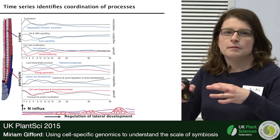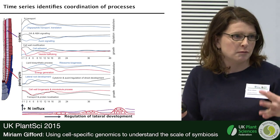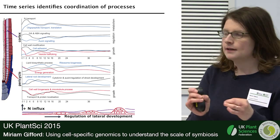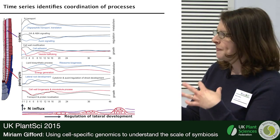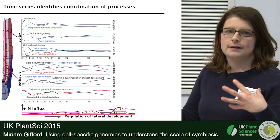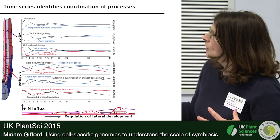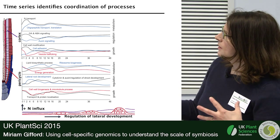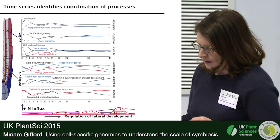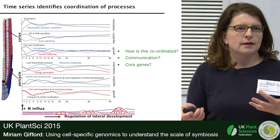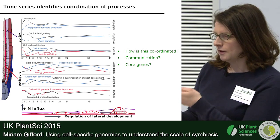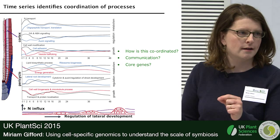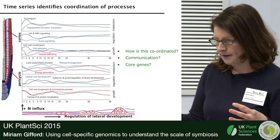Cell wall modification is important because underlying the cortex there must be movement to allow the lateral root primordia to emerge. In the pericycle there are many more relevant processes: modification of energy processes enabling energy for new division, and then we can track genes responsible for modifying lateral root development and look at individual cell-type processes. How is this coordinated? We think the core genes are important for coordinating different cell-type processes.